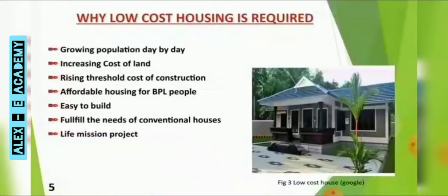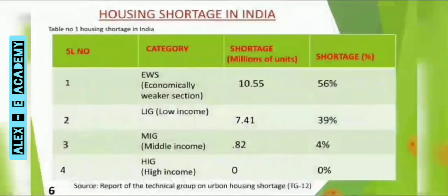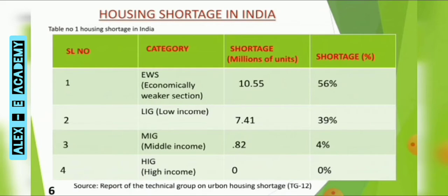This slide covers the relevance of this topic and why low-cost housing is required. The next is a table showing housing shortage in India. House is the third basic need of human after food and clothing. India is currently facing a shortage of 70.6 million houses. From this table, we can understand that economically weaker sections, low-income people, and middle-income people all face a housing shortage scenario, and it mostly affects economically weaker sections and low-income people.